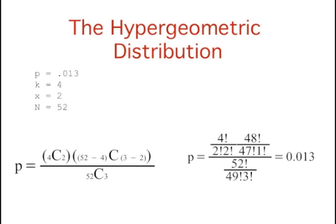The formulas for the number of combinations of k things taken x at a time are used to compute the probability, which is equal to 0.013.